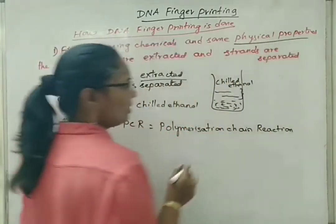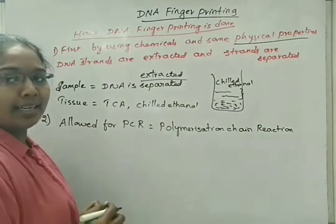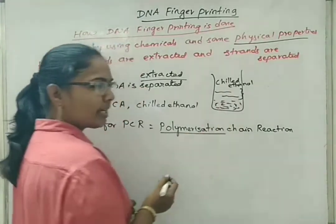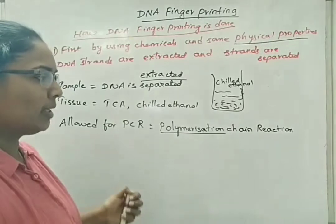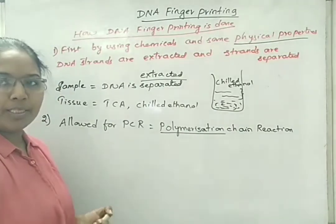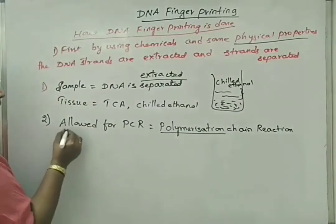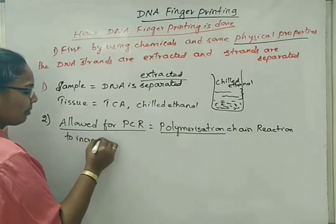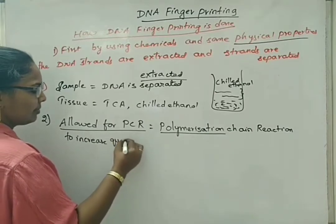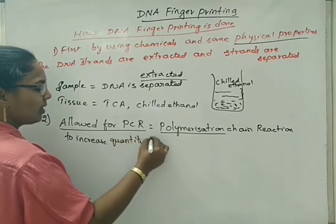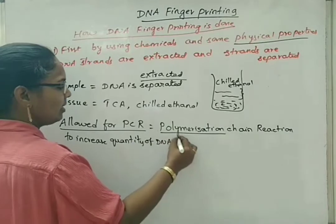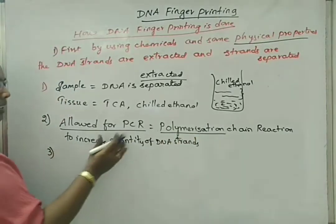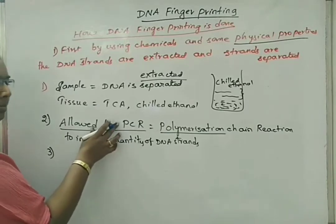In PCR, we use physical properties like high temperature. For polymerization, first we have to separate the double-stranded DNA into two single strands, then make many copies by the method of amplification. This PCR process increases the quantity of available DNA double strands. We will read PCR completely in the biotechnology topic.